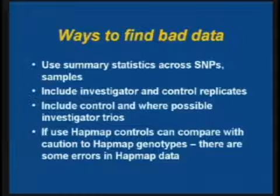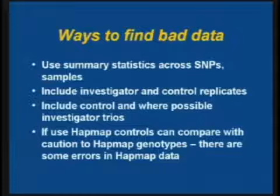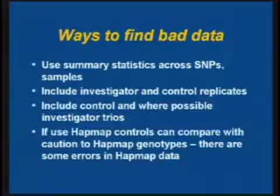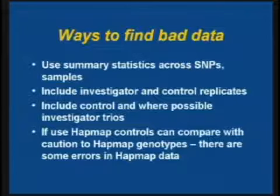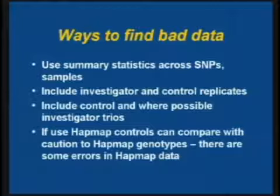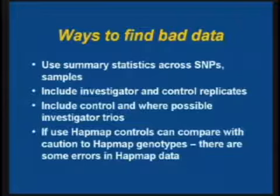So how do you find the bad data? You use summary statistics across SNPs and across samples. You include investigator and control replicates in your samples to be genotyped, even though you have to pay for them. You include control and, where possible, investigator trios — even if you're sending cases and controls, if you have any relatives, you may want to include parent-child pairs or trios to look at inheritance. You can use HapMap controls and compare the genotypes to the HapMap data, but be cautious because there is error in HapMap and some differences are just caused by that error or platform differences.